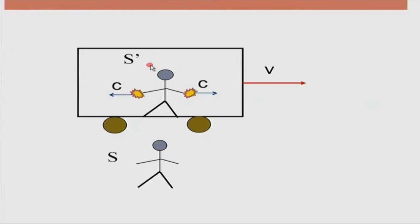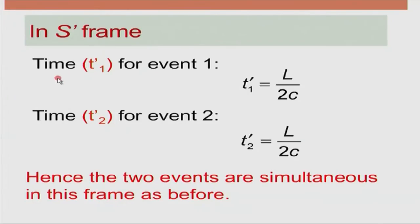Let us look at what happens as far as the S prime observer is concerned. Nothing has changed except that instead of u prime, it is c. The time for Event 1 is T1 prime = L/(2c), and the time for Event 2 is T2 prime = L/(2c). So according to this observer, these two events will occur at the same time, as long as the light is emitted from exactly the center of the compartment. The two events are simultaneous in S prime.